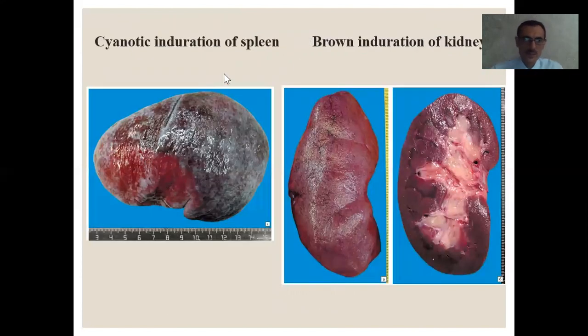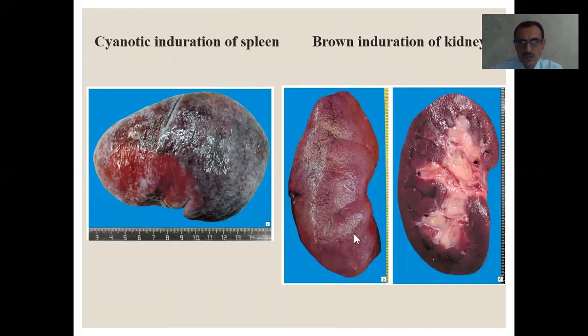From this illustration you see the cyanotic induration of the spleen and the brown induration of the kidneys.